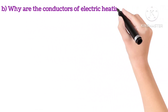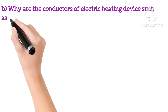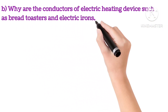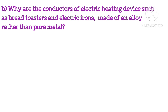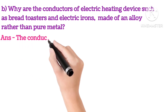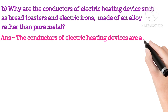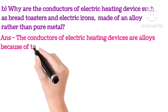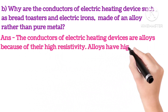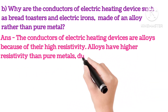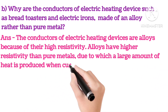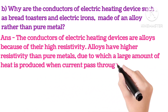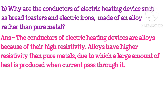Why are conductors of electric heaters, devices such as bread toaster and electric iron made up of alloy rather than pure metals? Answer is: the conductors of electric heating devices are alloys because of their high resistivity. Alloys have higher resistivity than pure metals, due to which a large amount of heat is produced when current is passed through them.